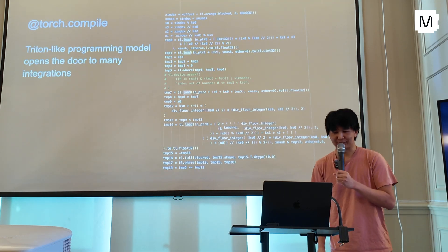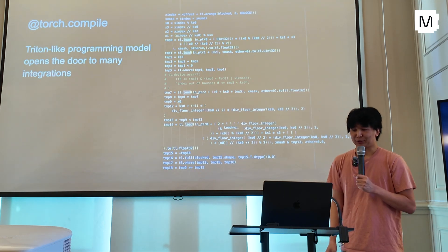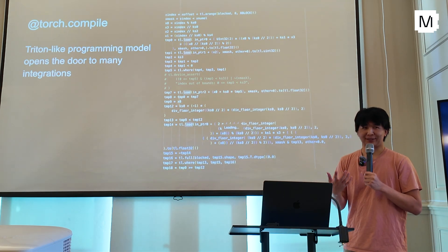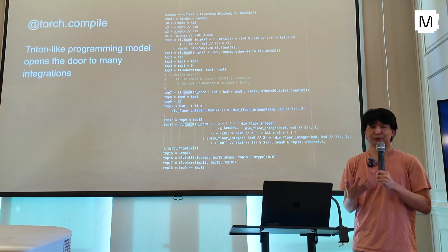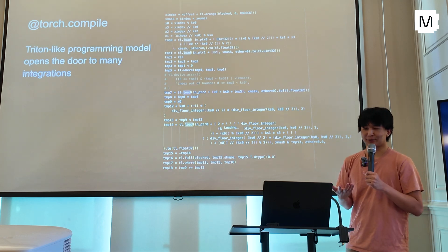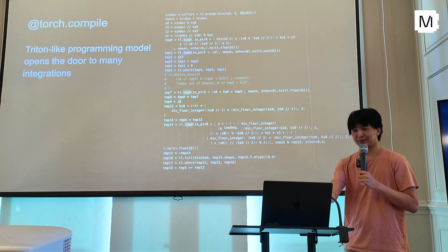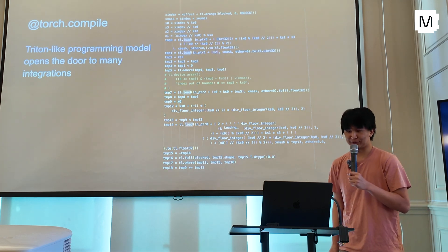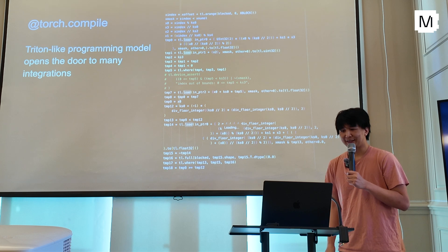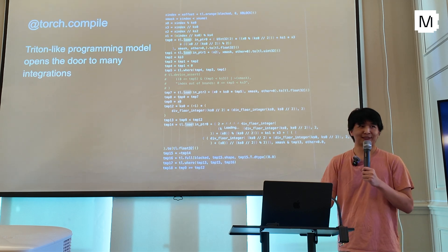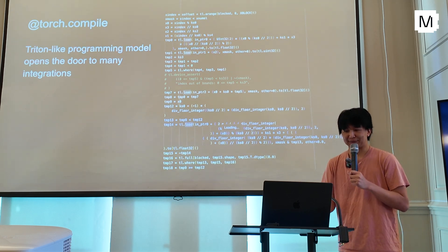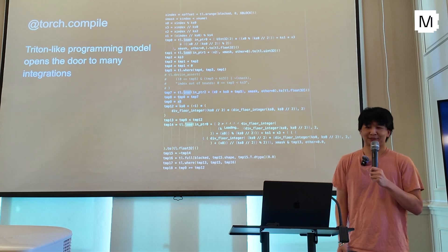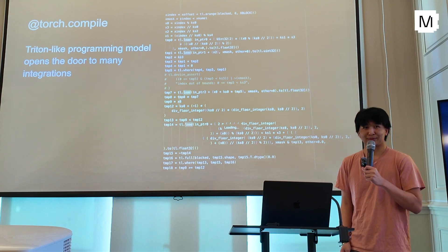The next question is: what does having a Triton-like interface to Mojo mean for tools that generate Triton source code? I took something that was spit out by Torch Compile, copy-pasted it into Mojo, added a couple of types here and there, and it worked. So that's going to be my hackathon project.